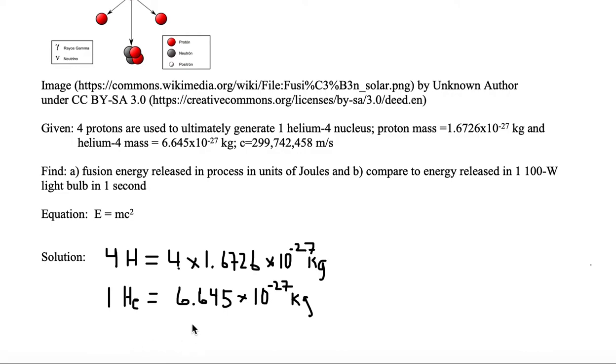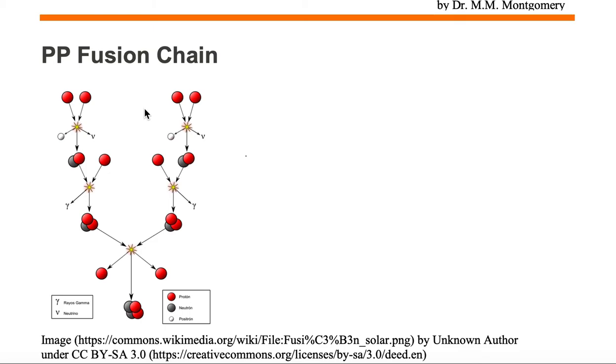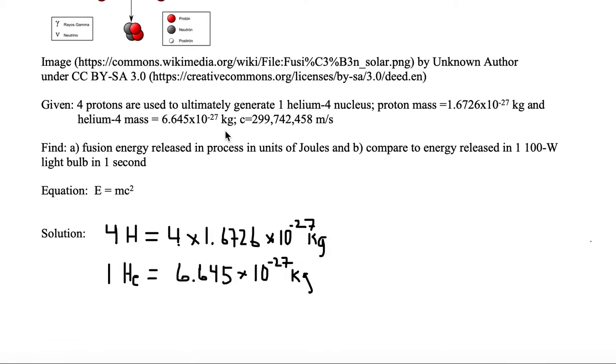So let's take a look at this. We're going to start out with four hydrogen atoms. So we want to know what the mass of the four hydrogen atom is. So we have four hydrogen, which is four times the mass of one of the hydrogen atoms, which is 1.6726 times 10 to the minus 27 kilograms.